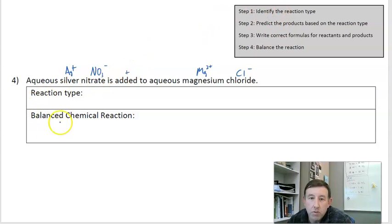Let's go ahead and write these out with the correct formulas real fast so I can predict my reaction type. So I've got AgNO3 plus MgCl2. The +1 and -1, so we don't need to add any new subscripts.